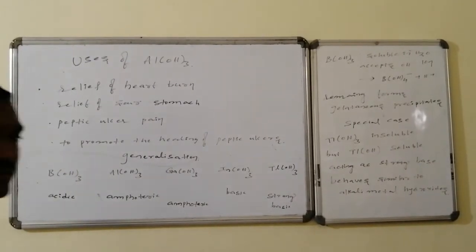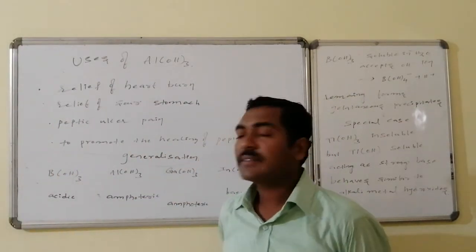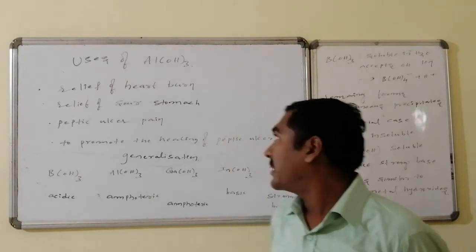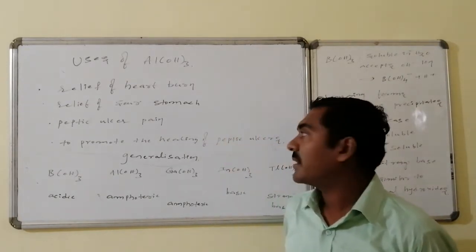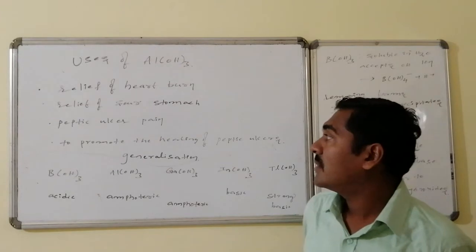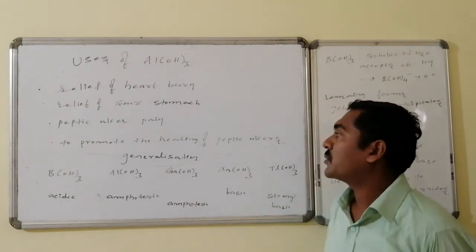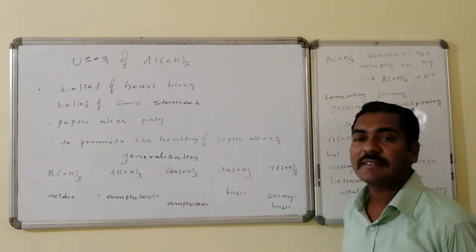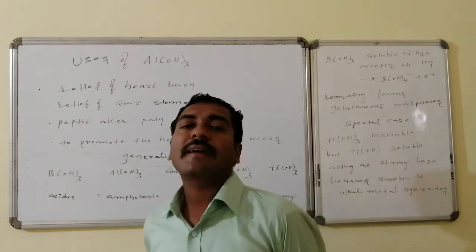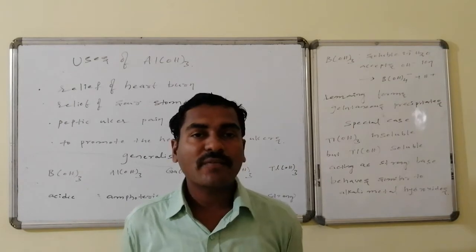In extension to yesterday's class, uses of aluminium hydroxide: aluminium hydroxide is used in getting relief from heartburn, relief from the sore nature in the stomach, and also in the curation and promotion of healing of peptic ulcers. As for the hydroxides related to the boron family are concerned,